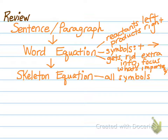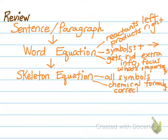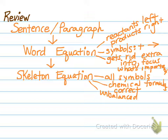Once we have our word equation, the first thing we're going to write toward a chemical equation is called a skeleton equation. The difference between our skeleton equation and our word equation is that now everything is written using chemical symbols. In our skeleton equation, it's important that our chemical formulas are written correctly. A skeleton equation is an unbalanced chemical equation — we've just taken the words that still existed in our word equation and made them symbols.